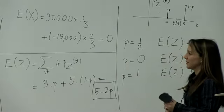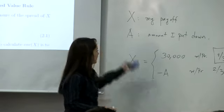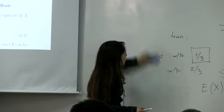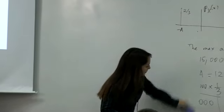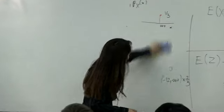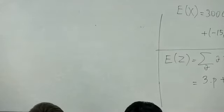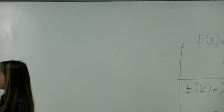Expectation is also called the first moment — it's a first order statistic of a distribution. Let's move on to the second order statistic that we will define, which is variance.